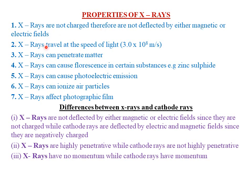The second property of X-rays is that X-rays travel at the speed of light, which is usually about 3.0 times 10 to the power 8 meters per second. The third property of X-rays is that X-rays can penetrate matter — that is, they have a high penetrating power compared to, for example, cathode rays.